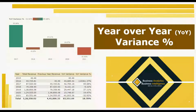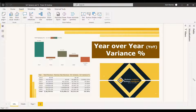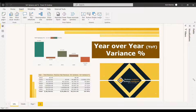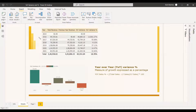Welcome to this new video. This video is about year-over-year variance and its percentage. Year-over-year variance is the difference between the current year's revenue and the previous year's revenue. The percentage result of this difference is the YOY variance percentage. When you go to the detailed view, you can see the years and their corresponding revenues.